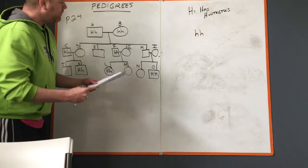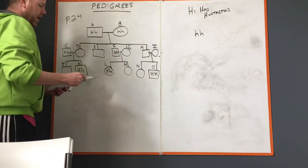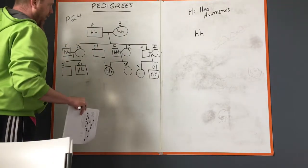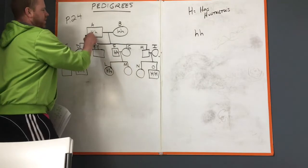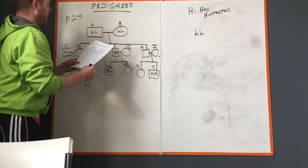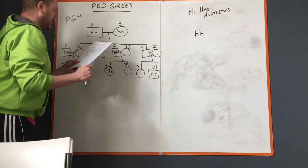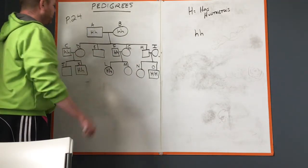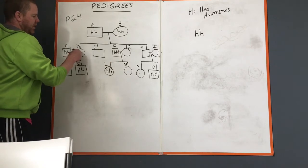Circles are females, squares are males, and capital H means they have it. So it's a male with it, this is a female without it. The question asks what is probably the genotype of individual D.